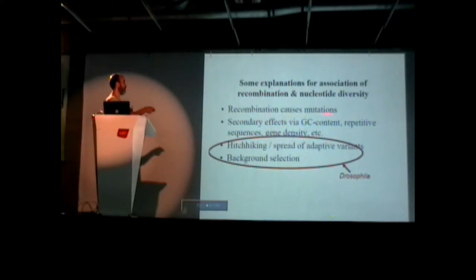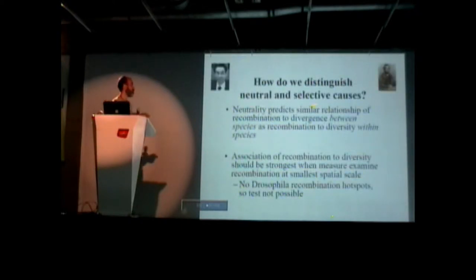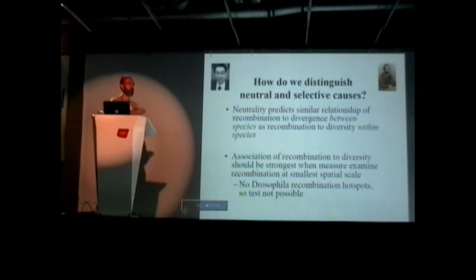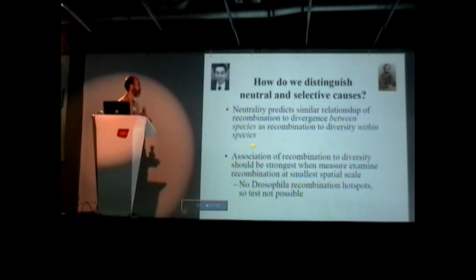We can't rule out the mutagenic cause because we would have seen the association between recombination and convergence. So how do you distinguish between neutral and selective causes? Neutrality predicts you should see a similar relationship where recombination is associated with divergence between species as with diversity within species, but we don't see that in studies of recombination.